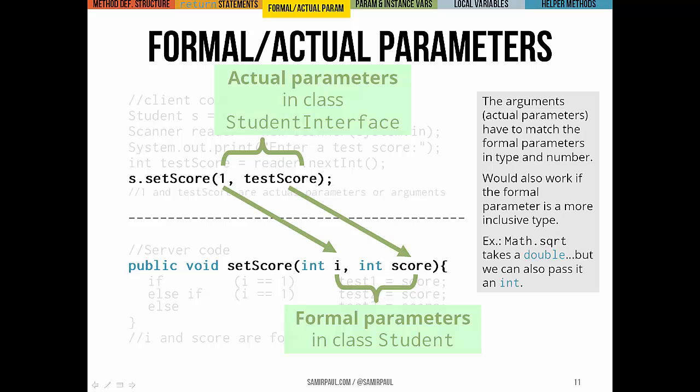On the other hand, the values that we actually pass to setScore in our client-side code, that would be 1 and testScore here, those we would call actual parameters or arguments.